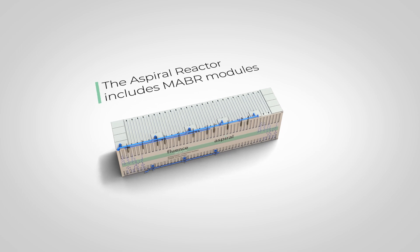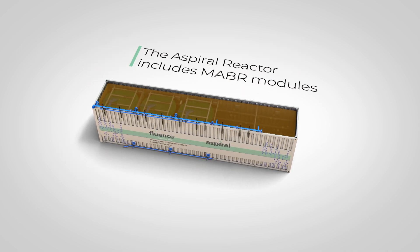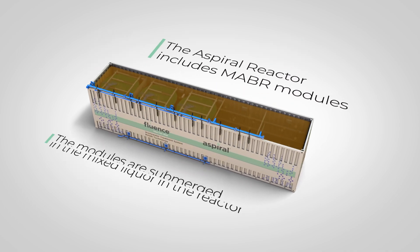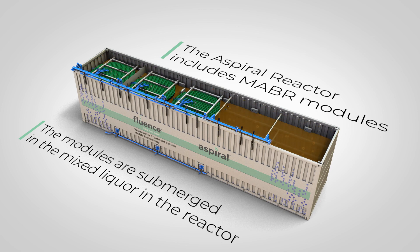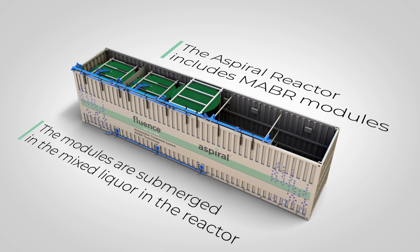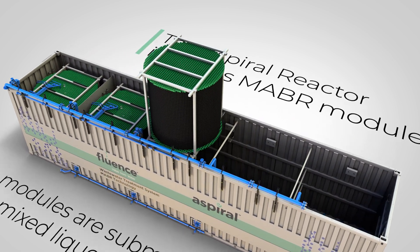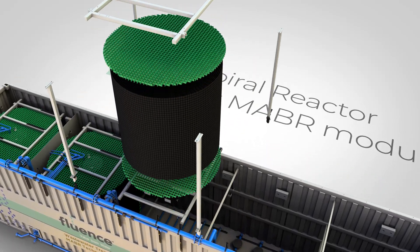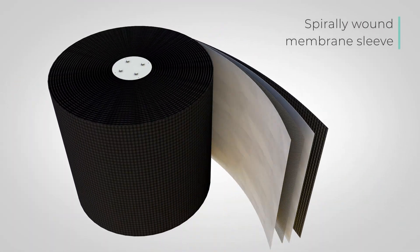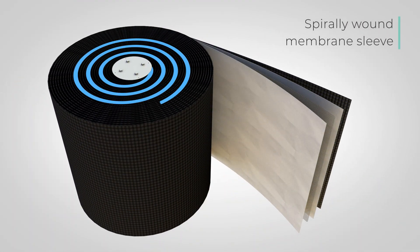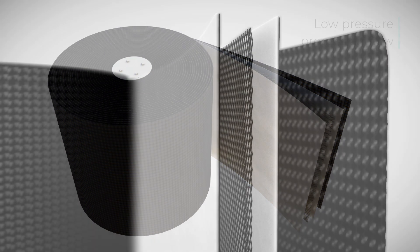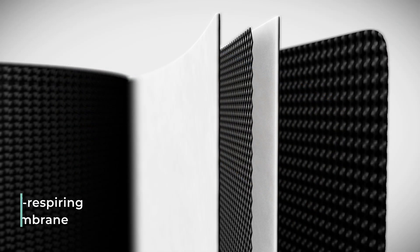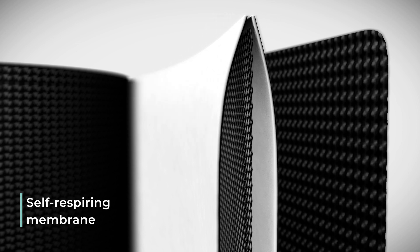A spiral reactor is comprised in part of MABR modules made of spirally-wound, flat-sheet self-respiring membranes. Each MABR module is made of a long membrane sleeve with an internal air spacer and an external water spacer. Low-pressure air is continuously blown through the sleeve, saving much of the energy consumed in higher-pressure conventional aeration.